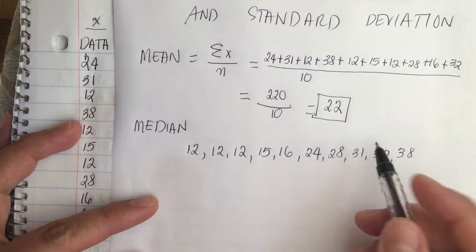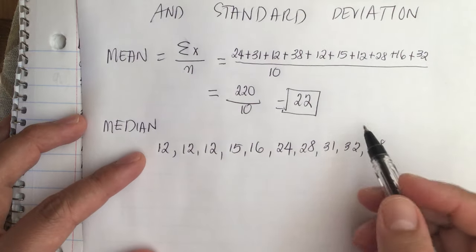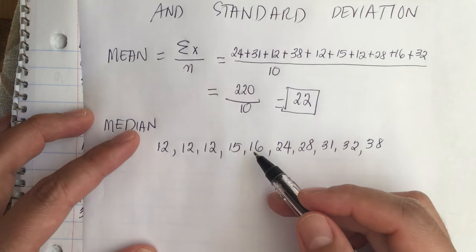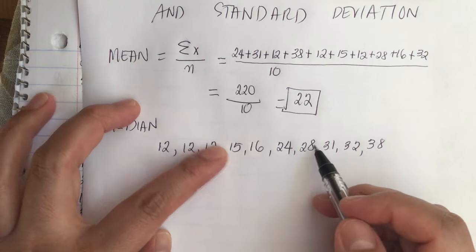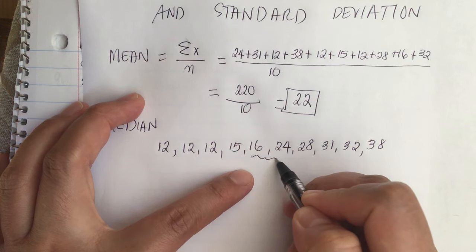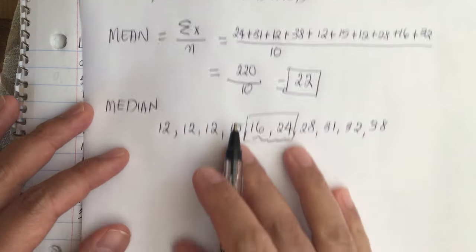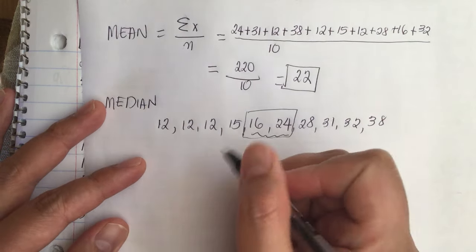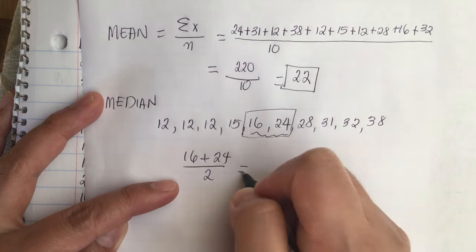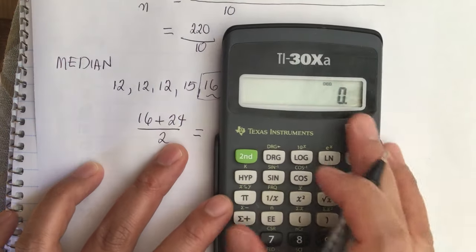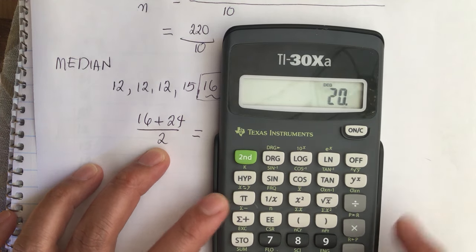Since this is an even number of data points, we take the two numbers in the middle. The two middle values are 16 and 24. So we compute 16 + 24 divided by 2, which gives us 20. The median is equal to 20.